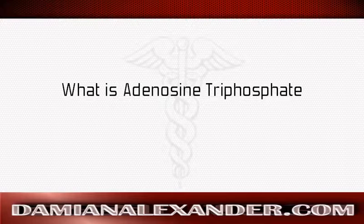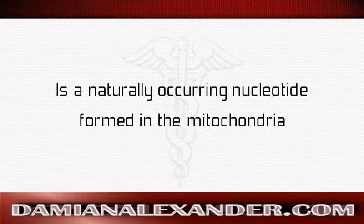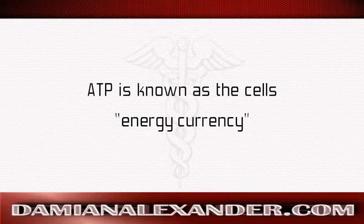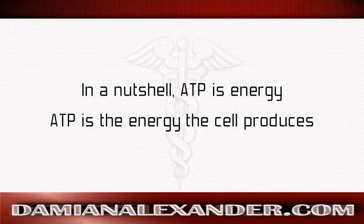In this video, I will discuss what is adenosine triphosphate. Adenosine triphosphate is a naturally occurring nucleotide formed in the mitochondria. ATP is known as the cell's energy currency. In a nutshell, ATP is energy.